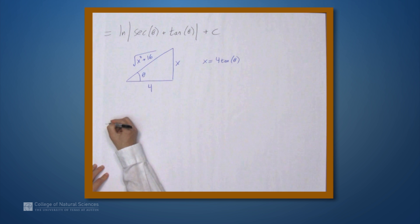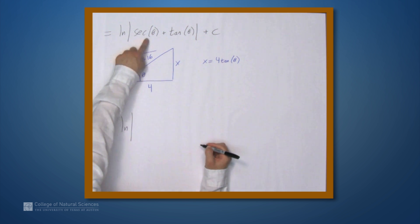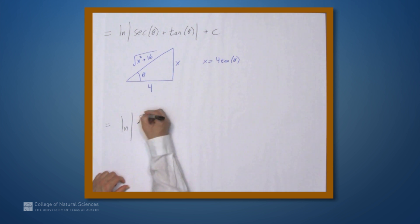So our answer, finally, is the natural log of the absolute value. What's secant theta? Secant theta is hypotenuse over adjacent, so this is the square root of x squared plus 16 over 4, plus tangent theta, which is x over 4, plus c.